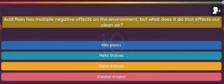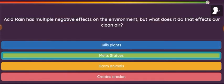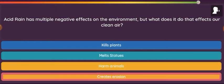Question: Acid rain has multiple negative effects on the environment, but what does it do that affects our clean air? Option 1: Kills plants. Option 2: Melts statues. Option 3: Harms animals. Option 4: Creates erosion.